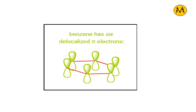When electron delocalization creates a ring current, that ring current generates a magnetic field. The electron delocalization causes a ring current, and this ring current produces a magnetic field, which we will see in the next slide.